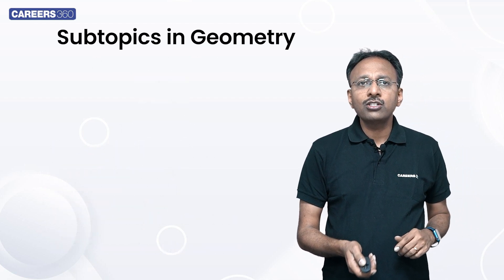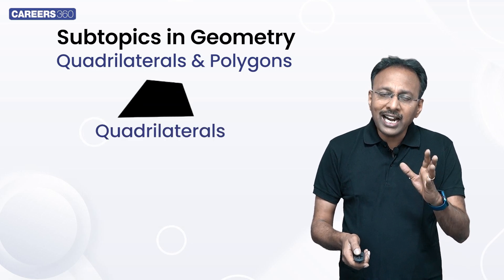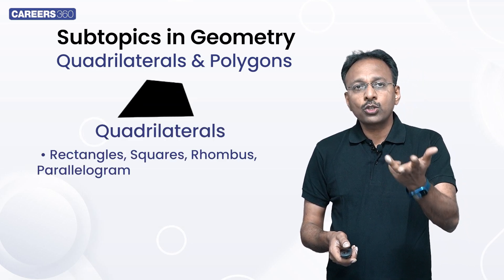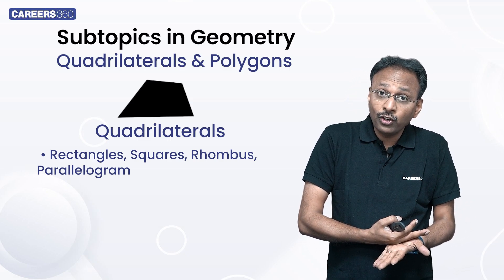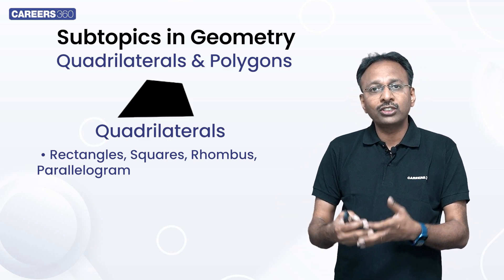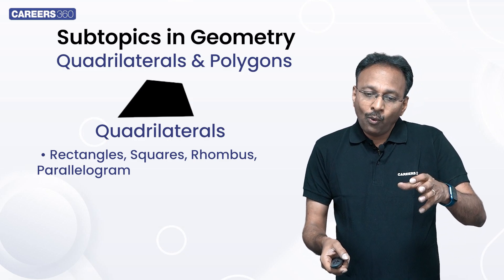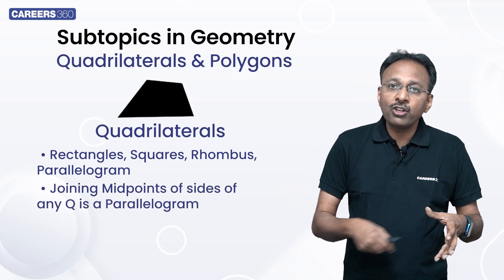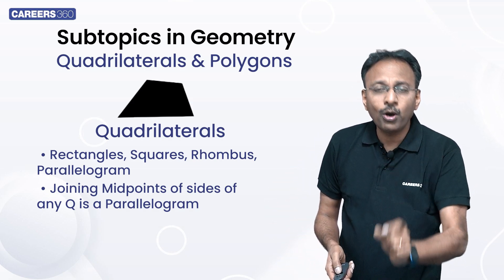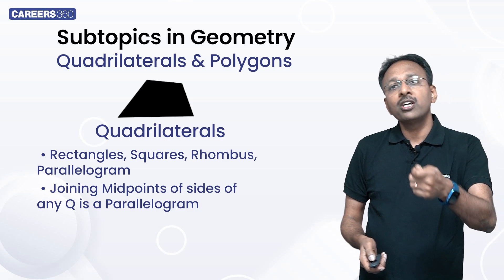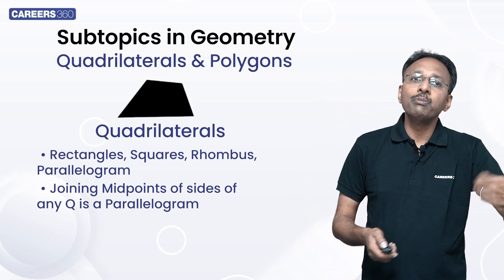Apart from angles and triangles, we have quadrilaterals and polygons. Quadrilaterals include rectangles, squares, rhombus, and parallelogram. You need to understand their areas and angles. You also need to understand what happens if you join the midpoints of a quadrilateral — it forms a parallelogram. This is a small but very interesting point that has been used and utilized many times in CAT.